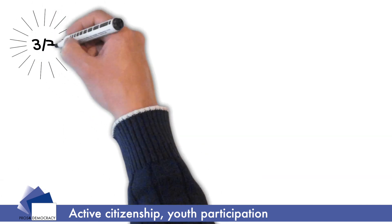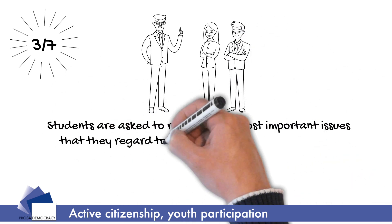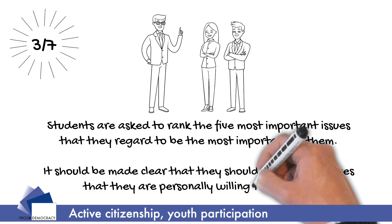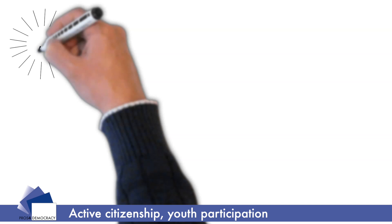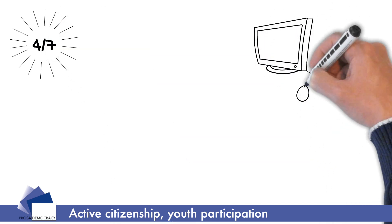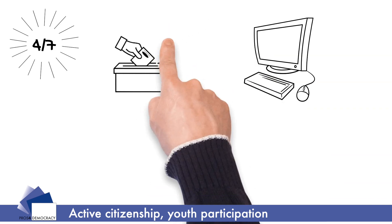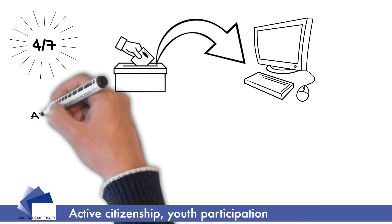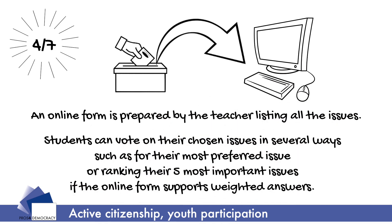Students are then asked to rank the five most important issues that they regard as most important to them. It should be made clear that they should only choose issues that they are personally willing to work on. Furthermore, an online form is prepared by the teacher listing all the issues. Students can vote on their chosen issue in several ways, such as selecting their most preferred issue or ranking their five most important issues if the online form supports weighted answers.